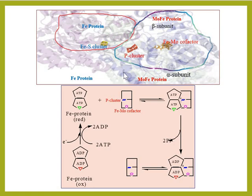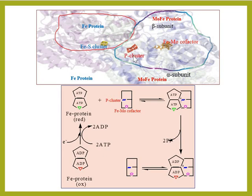This is the nitrogenase enzyme again. This part is the Fe protein and this is the MoFe protein. The MoFe protein has two subunits: alpha and beta. It has two parts — the P cluster and the FeMo cofactor. The Fe protein has one part, the Fe-S cluster. The Fe-S cluster is positioned between the Fe-S cluster and the FeMo cofactor, showing how electron transfer takes place.